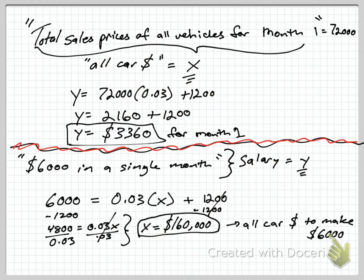Let's talk about the next two questions. The total of the sales prices of all the vehicles Sid sold during the first month was $72,000. What was Sid's total income during that month?